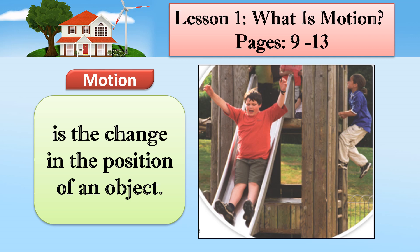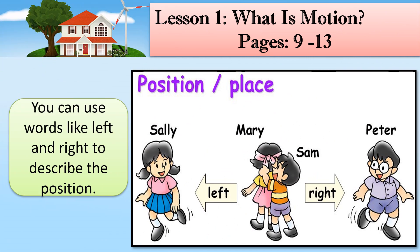Motion means the change in the position of an object. Now please look at the picture, especially look at Sally. Question number one: where is the place of Sally? Your answer should be to the left of Mary. I will use another word — position — and ask: where is the position of Sally? Your answer is the same: to the left of Mary. So place and position both have the same meaning.